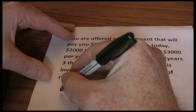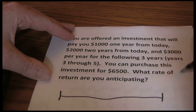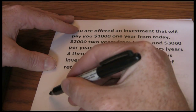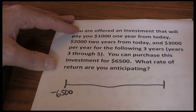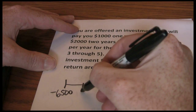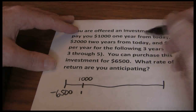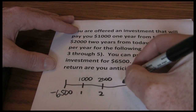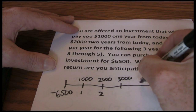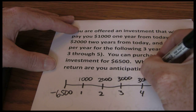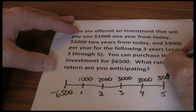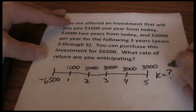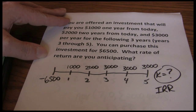First thing we want to do is visualize our timeline — you don't have to draw these if you don't want to, but it helps us see what's happening. We're spending $6,500 today upfront. In year one we get $1,000, in year two $2,000, in year three $3,000, year four another $3,000, and finally in year five our last $3,000. Now we're trying to figure out the rate of return we're earning — that's called the internal rate of return on this investment.